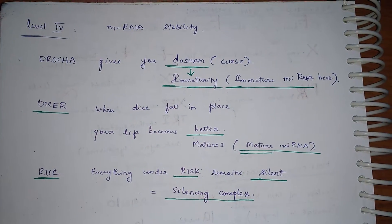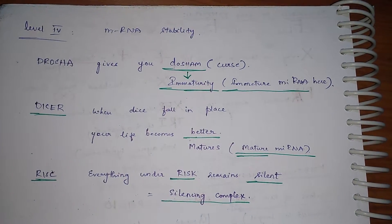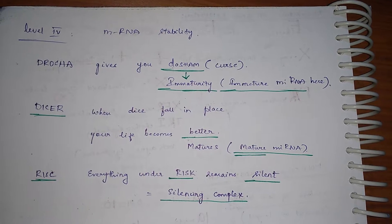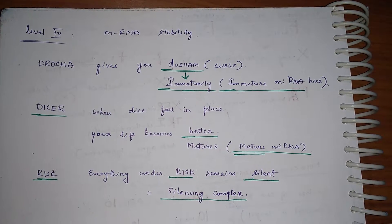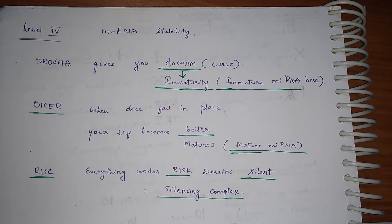Drosha gives you dosham, that is curse. Dosham is the Hindi word for curse. So dosham is immaturity, here immature mRNA.